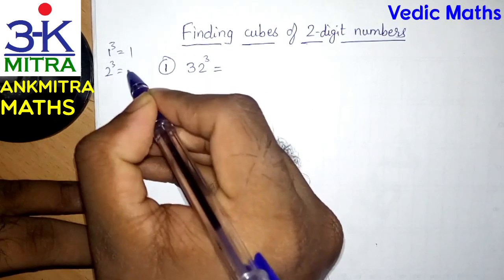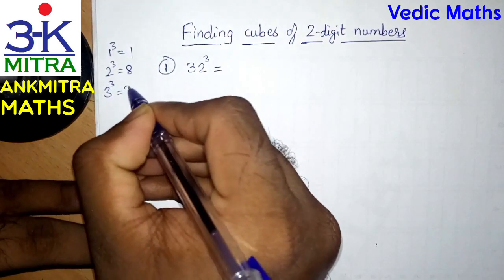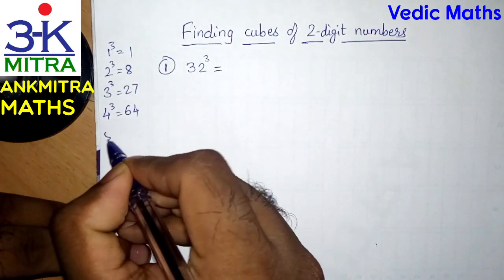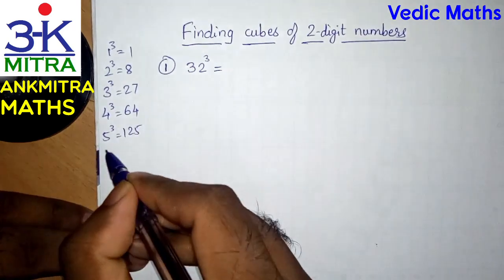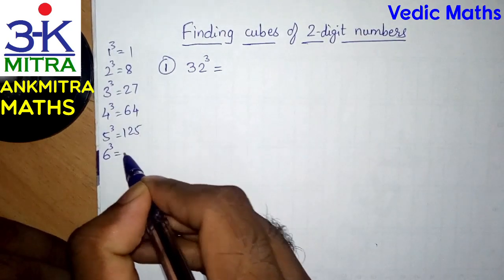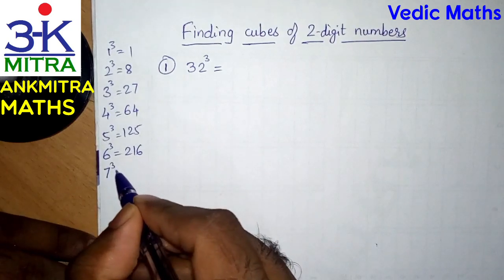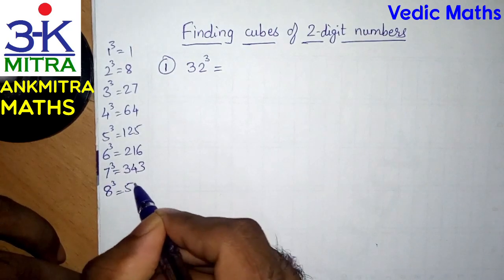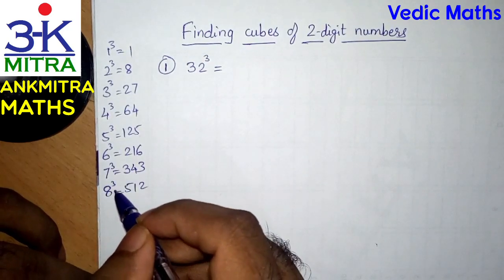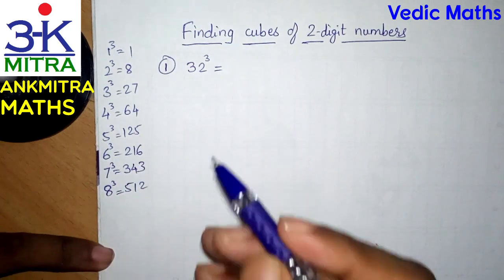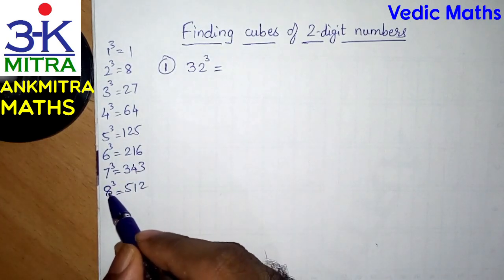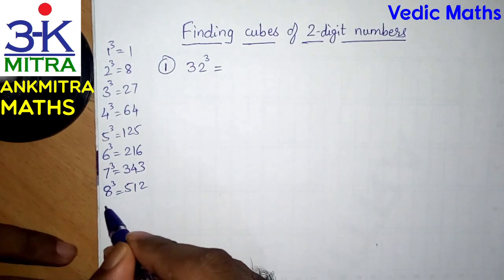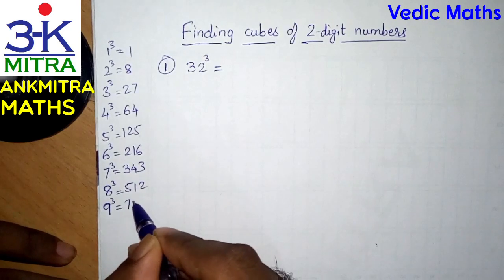2 cube is 8, 3 cube is 27, 4 cube is 64, 5 cube is 125, 6 cube is 216, 7 cube is 343, 8 cube is 512. Cube means basically multiplying the same number 3 times — 8 cube means 8 multiplied by 8 which is 64, then multiplied by 8 again which comes to 512. And the final number is 9 cube which is 729.